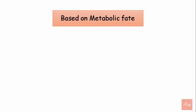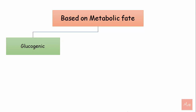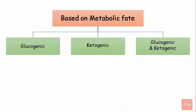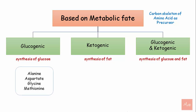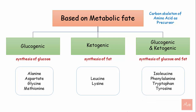Based on metabolic fate, amino acids can be classified as glucogenic, ketogenic, or both glucogenic and ketogenic. Glucogenic amino acids can synthesize glucose; ketogenic amino acids can synthesize fat; while those that are both can synthesize both glucose and fat. Glucogenic amino acids include alanine, aspartate, glycine, and methionine. Ketogenic amino acids are leucine and lysine. Both ketogenic and glucogenic amino acids are isoleucine, phenylalanine, tryptophan, and tyrosine.